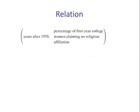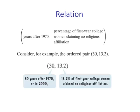We can think of this as a relation: the number of years after 1970 and the percentage of first-year college women claiming no religious affiliation. For example, if we look at the ordered pair (30, 13.2), this would be 30 years after 1970, which would be 2000, and the corresponding Y value is 13.2%, which is 13.2% of females who claim no religious affiliation. So this is an ordered pair.